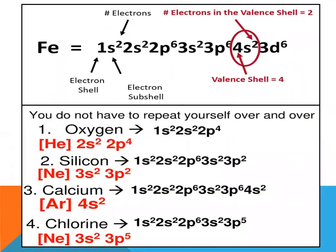Iron, atomic number 26: configuration 1s2 2s2 2p6 3s2 3p6 and beyond. With the help of the valence shell electronic configuration, we can predict the group number, period number, and block. Iron is present in group 6B, in the fourth period, and its block is the d-block. Using noble gas shorthand minimizes repetition and is the easiest way to represent configurations.